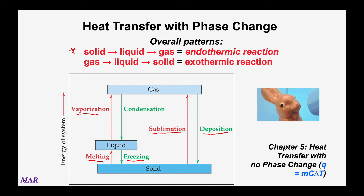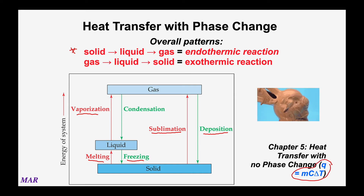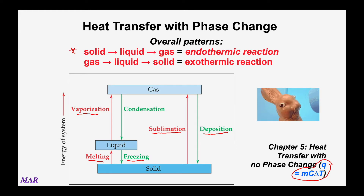Those are the terms for the different phase changes, and in chem 221 we looked at some of these. I referred to them as a heat of something times a mass of something — those are the energies to make phase transitions possible. We're also going to bring back into this mix the q equals mc delta T stuff from chem 221, which is useful when you have a temperature change but no change in phase. If any of this looks unfamiliar, go back and look at the chapter five stuff at mhchem.org/221.